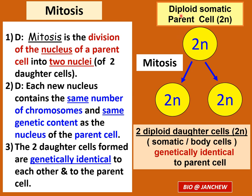A parent cell is always a diploid somatic cell. Diploid is represented by the symbol 2N, where N stands for sets. A diploid cell is a cell that contains two sets of chromosomes — one set from the father passed down through the sperm, and one set from the mother passed down through the ovum.